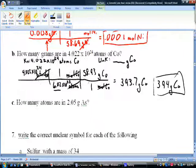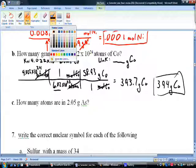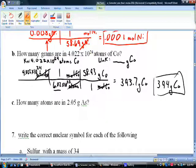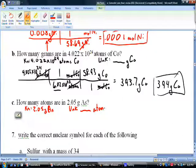One more of these. How many atoms are in 2.05 grams of arsenic? The thing we know is that we have 2.05 grams - not very much, the weight of a couple paperclips. This is arsenic. The thing we're looking for is how many atoms is this?